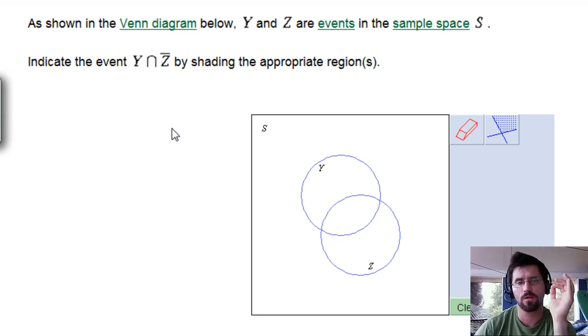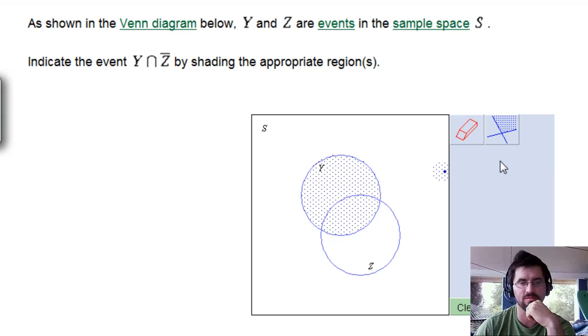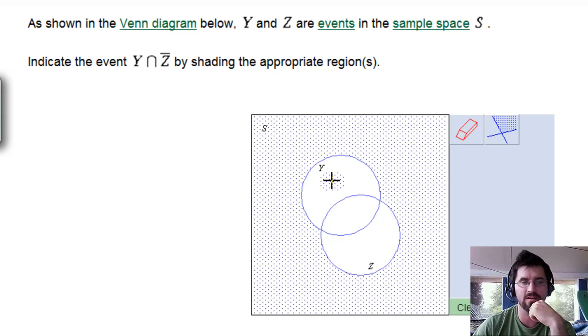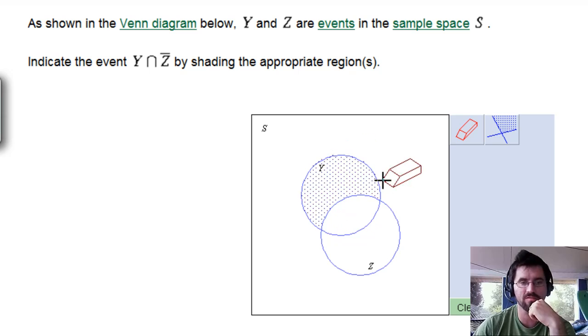Well, we know an intersection between Y and Z is where the two overlap, and that's how you can always find an intersection. If you can figure out where Y is, and you can figure out where Z complement is, or not Z, then you can look for their overlap. So we know Y is everything in that circle. Z is everything in that circle. So not Z is everything outside of Z, including that, and what part of that is also part of Y? Only this part here.